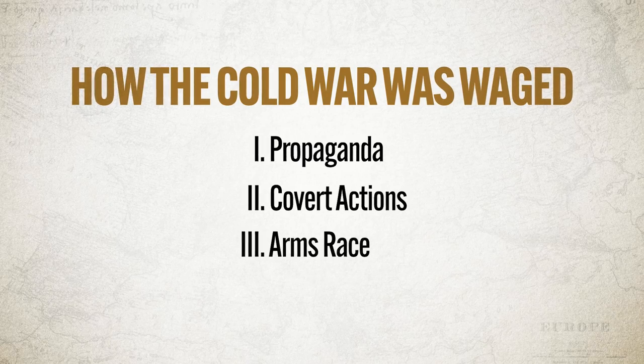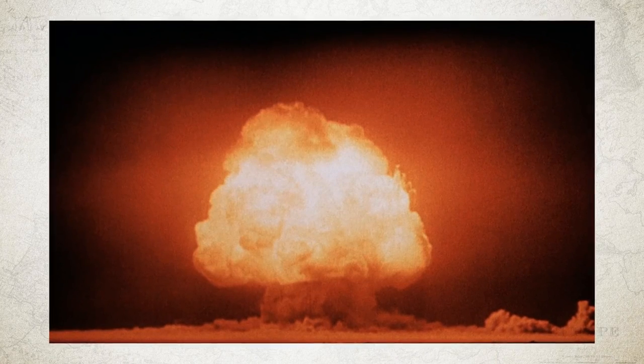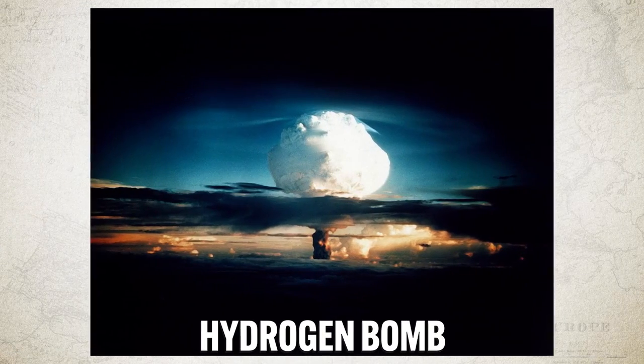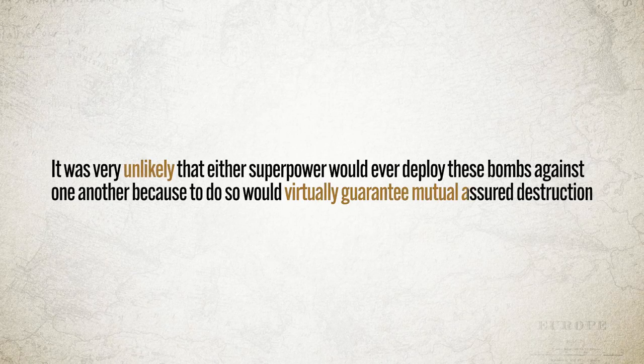Third, the Cold War was waged through an arms race — especially the buildup of nuclear weapons. The US had developed and deployed the world's first nuclear bombs at the end of World War II, devastating Hiroshima and Nagasaki. Stalin, feeling left out and distrustful, set to work developing the same technology, and the Soviets successfully tested their first atomic bomb in 1949. Not to be outdone, Truman ordered development of the hydrogen bomb — about a thousand times more destructive. The Soviets went ahead and developed one too. It was very unlikely either superpower would ever deploy these against one another, since doing so would guarantee mutual assured destruction, but this one-upmanship was a key feature of the Cold War.